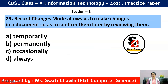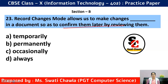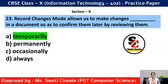Question 23: Record Change mode allows us to make changes dash in a document, so as to confirm them later by reviewing them. Since changes need to be reviewed later, they are temporary. The correct answer is option A — Temporary.